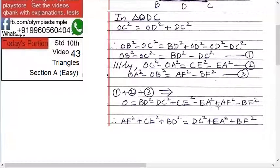c square minus e square plus af square minus bf square. Take all minuses on the other side you get af square plus ce square plus bd square equals to dc square plus e square plus bf square and that's what is required.